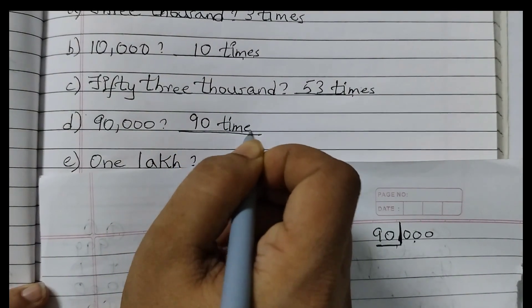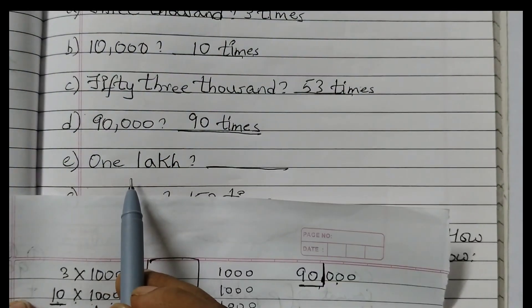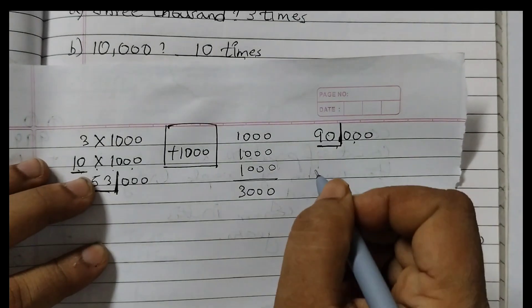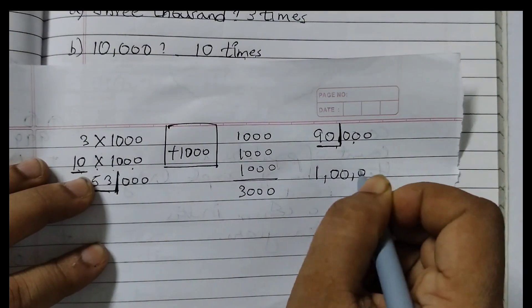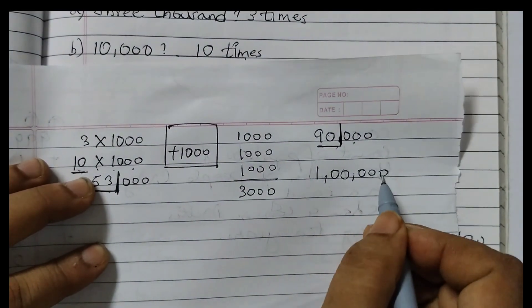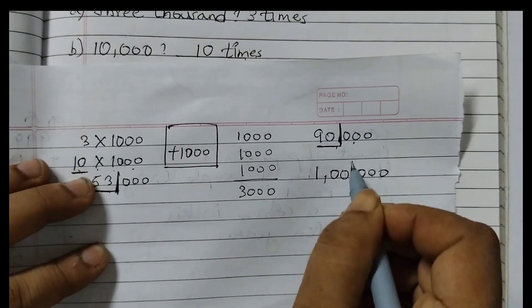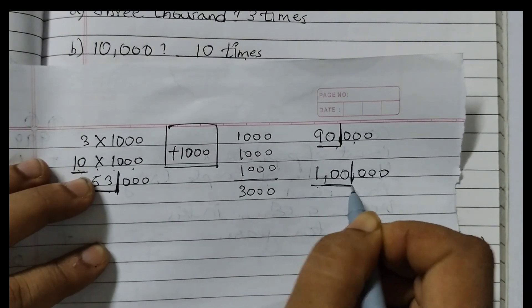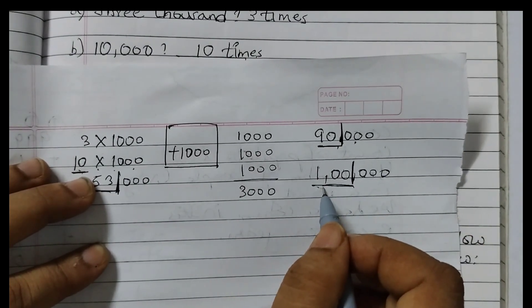90 times. 1 lakh. How do we write 1 lakh? 1 and then 5 zeros, right? So 1, tens, 100, 100,000. So put a line here. So the answer would be 100 times.